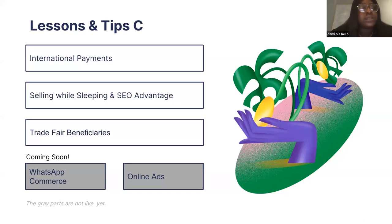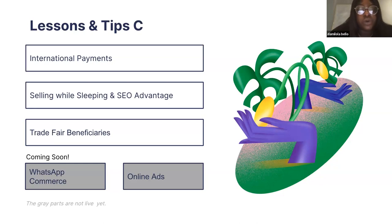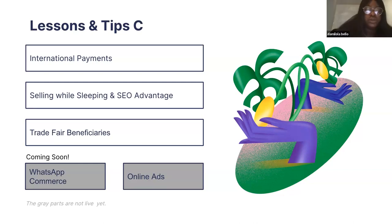Exciting things coming soon: WhatsApp Commerce — your customers will be able to buy from your store via WhatsApp, very easy. You'll also be able to pay for online ads — Instagram, Facebook — directly from your dashboard, which is very helpful since paying for online ads in Nigeria is currently painful. Capital is also coming: your credit score will be based on your Flutterwave sales volume. Once you hit a threshold, your dashboard automatically shows what amount you're eligible for, and repayments are just deducted from your wallet.